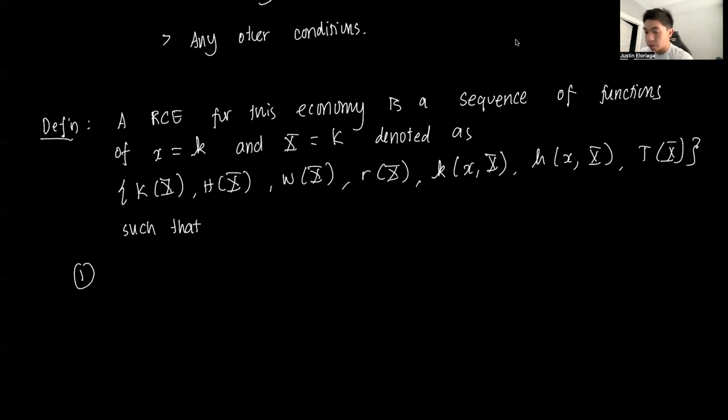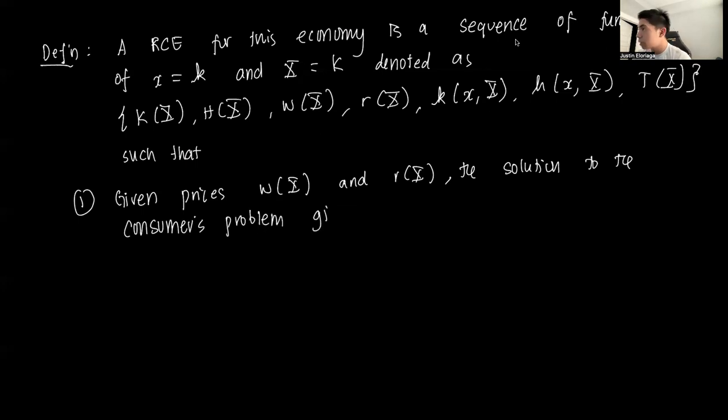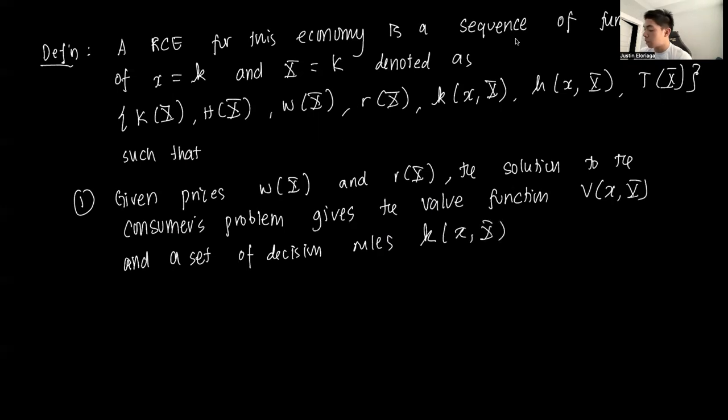Number one: given prices W(X) and R(X), the solution to the consumer's problem gives the value function V, which is a function of both the individual and the aggregate state, and the set of decision rules. Those decision rules are on capital holding tomorrow, as well as a labor supply decision.